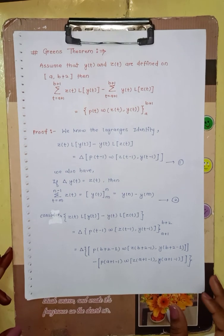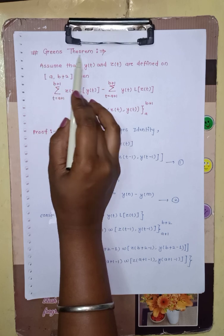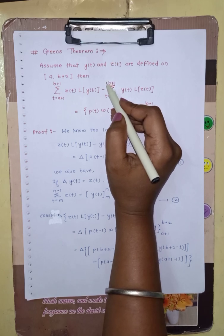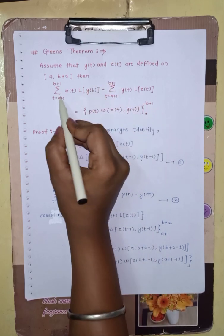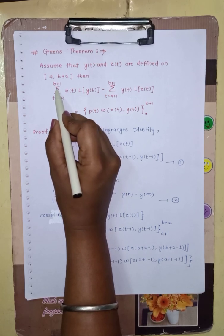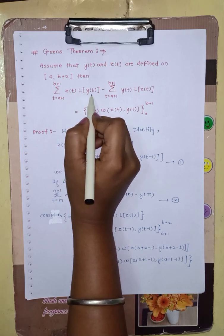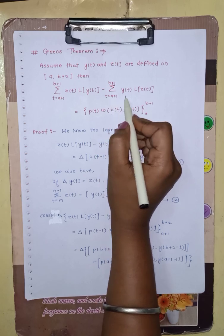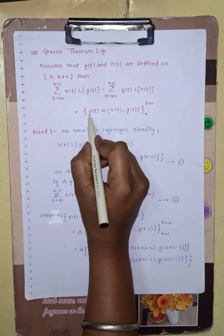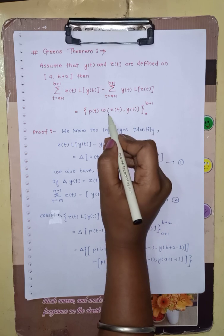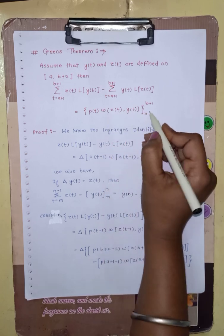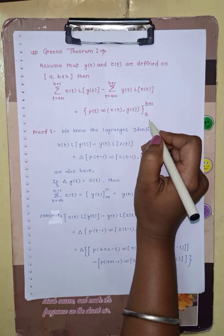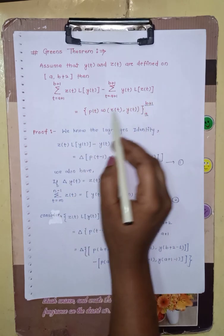So what is the statement of Green's theorem? Assume that y(t) and z(t) are defined on [a, b+2]. Then the summation where t equals a+1 to b+1 of z(t)·L[y(t)] minus the summation from t equals a+1 to b+1 of y(t)·L[z(t)] equals p(t)·ω(z(t), y(t)) evaluated at limits a to b+1.